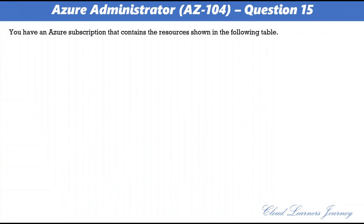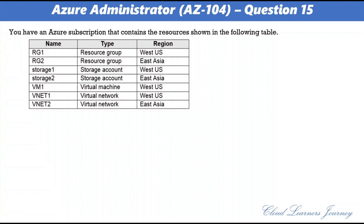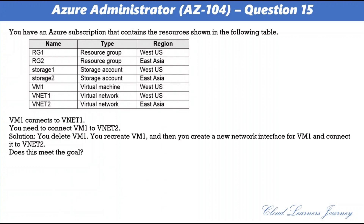Question 15. Same resources as before, but the solution is different. The proposed solution is: delete VM1, recreate VM1, then create a new network interface for VM1 and connect it to VNet2. The correct answer is A. Yes. When you create an Azure virtual machine, you must create a virtual network or use an existing VNet. You can change the subnet a VM is connected to after it's created, but you cannot change the VNet. This concludes Part 7.